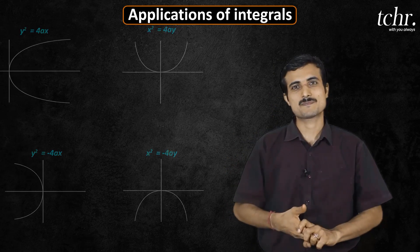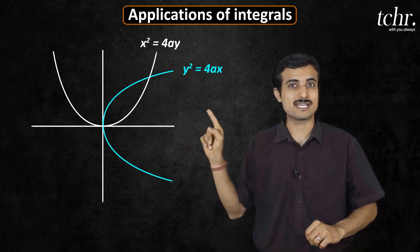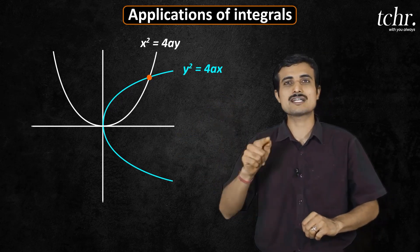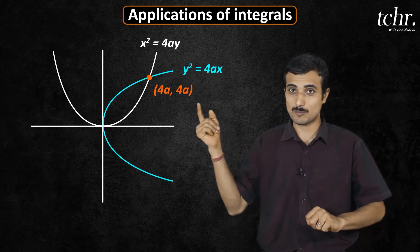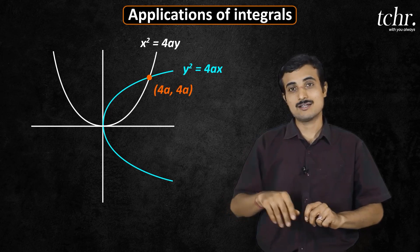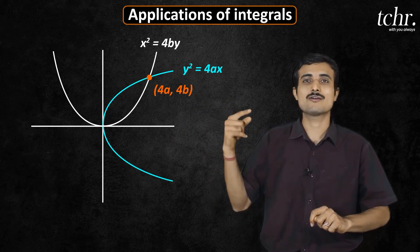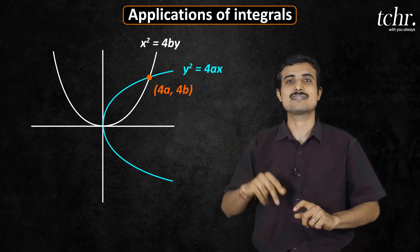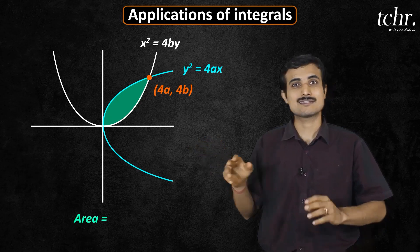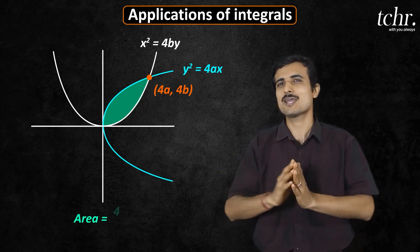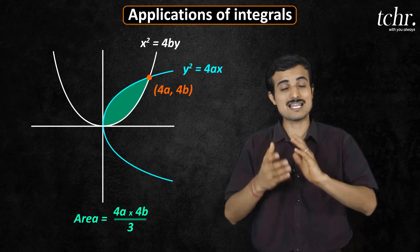Now, special case: y square equal to 4ax, x square equal to 4ay. This point will intersect, that point is 4a, 4a. y square is 4ax, x square equal to 4by, the point is 4a, 4b, is the point of intersection. And what about the area between two curves? This area is simply 4a into 4b divided by 3, that is the final answer.